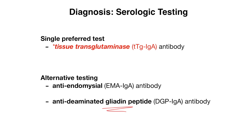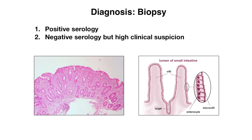Along with serologic testing, the next step is a biopsy, which is done with positive serology or negative serology but high clinical suspicion. A biopsy is the confirmatory test for celiac disease. Within the small intestine, tiny hair-like projections called villi increase surface area for nutrient absorption. In celiac disease, inflammation leads to a loss of villi — a flattening seen on histology. As shown in this slide, there is a complete loss of villi, whereas normally many projections would be visible.